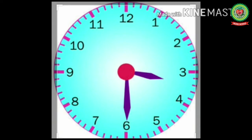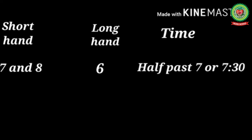I hope you all have understood how to read half past time. Now let me check how much you have learned. I'll tell you the position of the hands and you will tell me the time. If the short hand is between seven and eight and the long hand is at six, what time is it? Yes, the time is half past seven, or seven thirty.